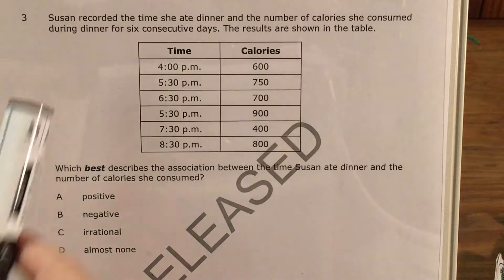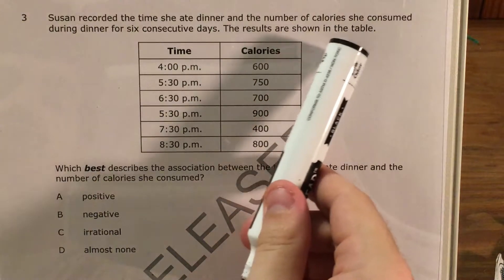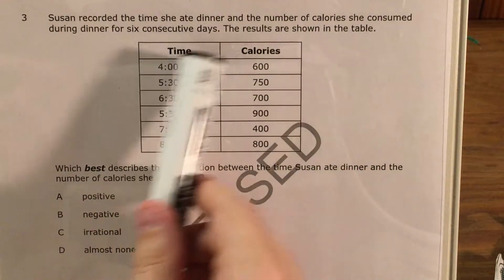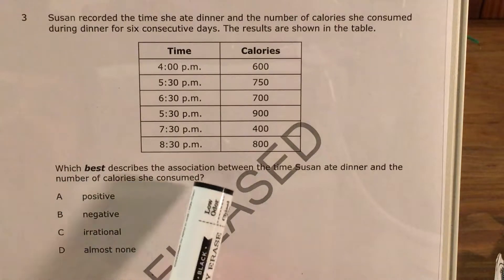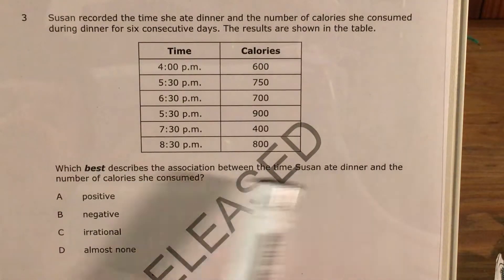We can see that Susan recorded the time she ate dinner and the number of calories she consumed during dinner for 6 consecutive days. The results are shown in this table, and we're supposed to find which best describes the association between the time Susan ate dinner and the number of calories she consumed.